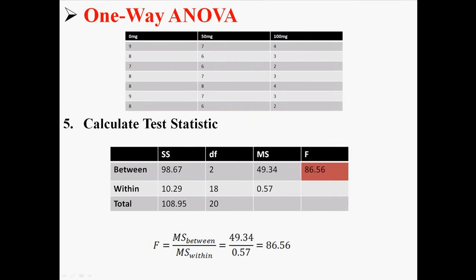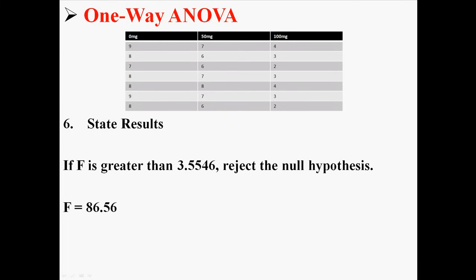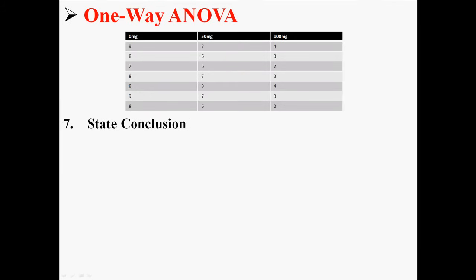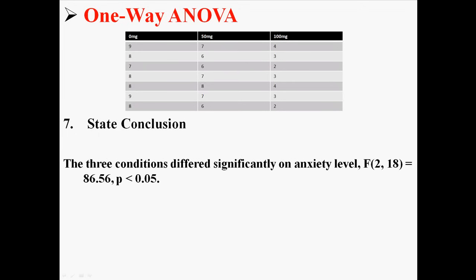Now everything we've done so far, it was just to get that f. And now we're going to go back to our decision rule, which was if f is greater than 3.5546, reject the null hypothesis. We found an f of 86.56. So that means we are going to reject the null hypothesis. Our conclusion in this case would be, the three conditions differed significantly on anxiety level. And then the official way of writing that would be f(2,18) = 86.56, p < 0.05.